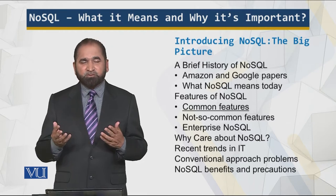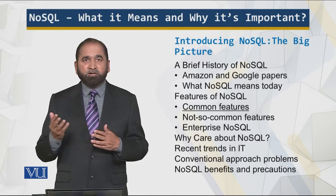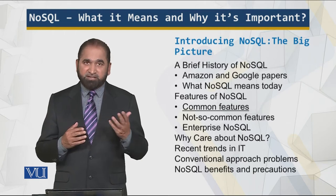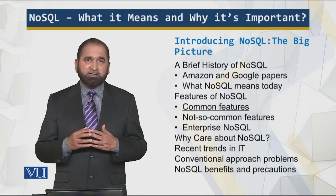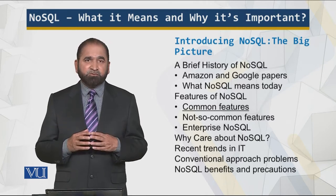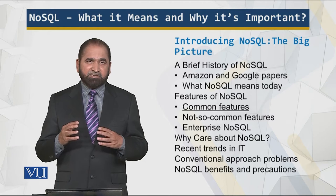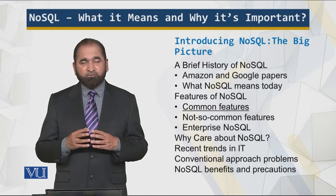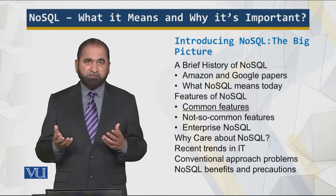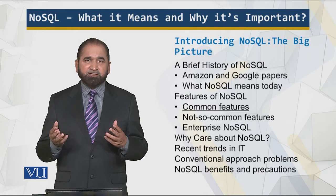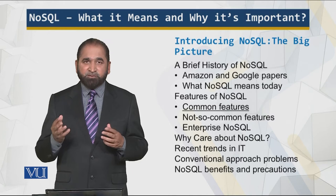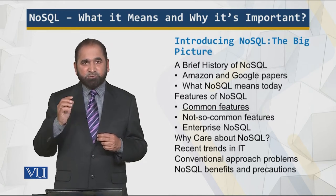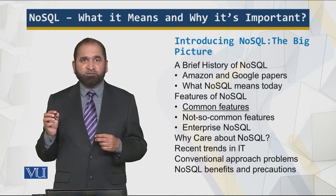Those messages could be what different people had for dinner, where they are going for dinner, their feedback about different products. Those messages could also be, for example, the diagnosis of medical results. So we see that data is generated in the form of text very frequently and very fast — a tremendous amount of data, and it is not very structured.